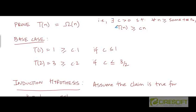Remember that this is a separate proof from what we were trying to prove earlier, which was the upper bound on T. In proving the upper bound of T, we ended up with something on the right hand side that we couldn't possibly prove the original claim with, which is why we ended up subtracting a lower order term and proving the modified claim that way. But as we will see, proving T is in Big Omega can be done in a pretty straightforward way.